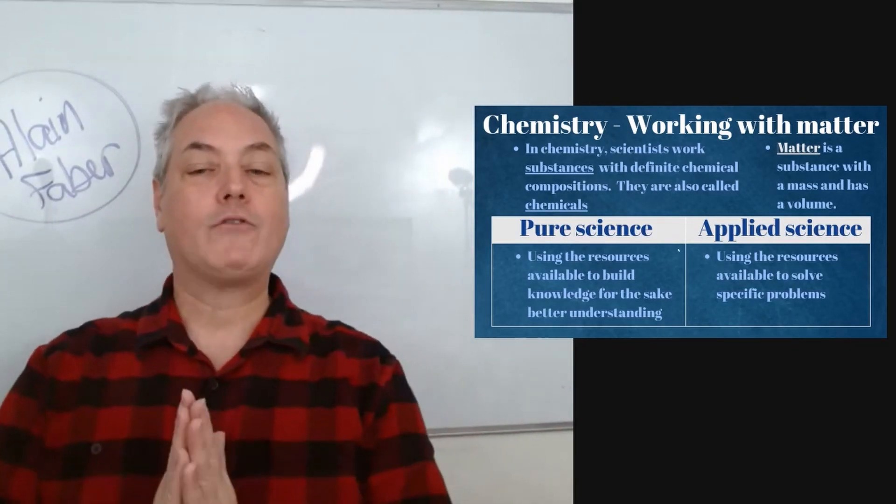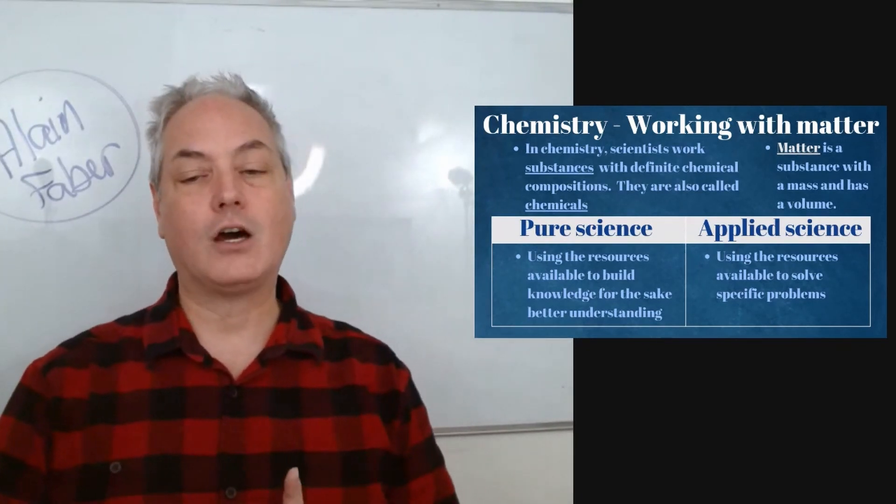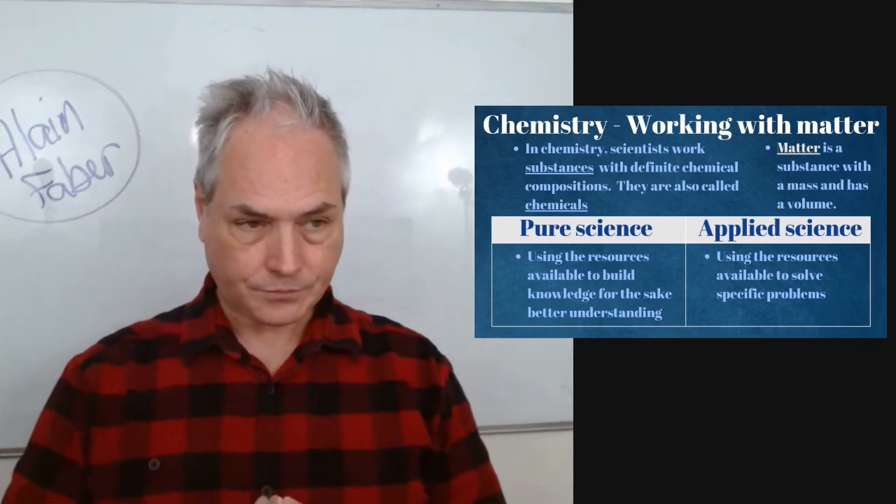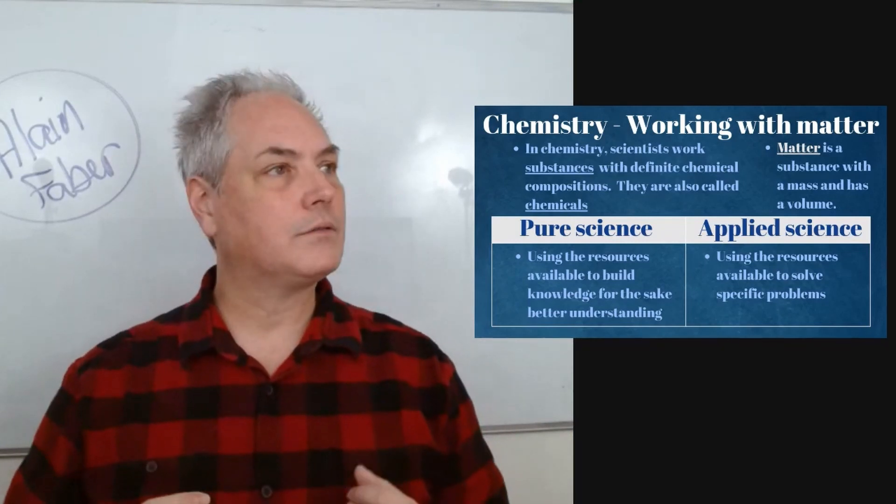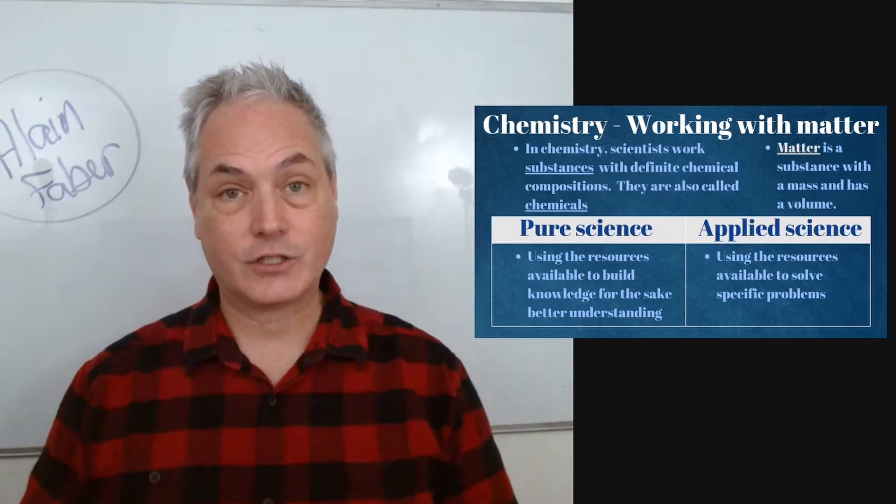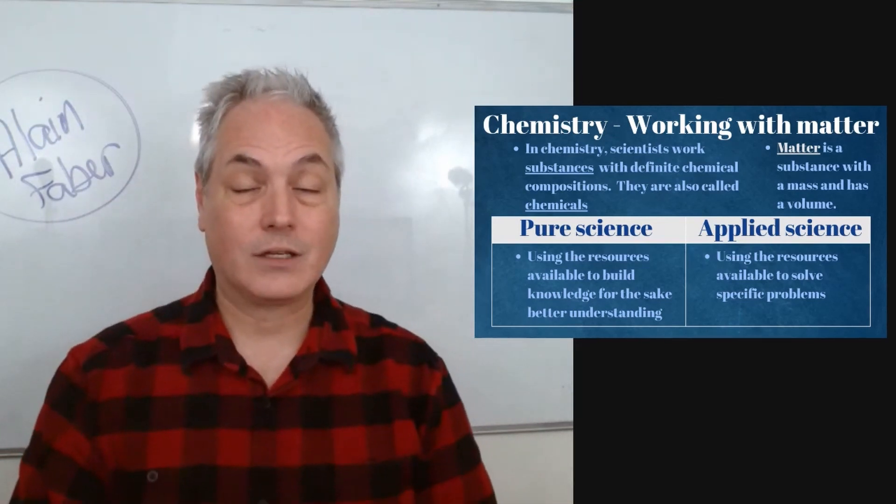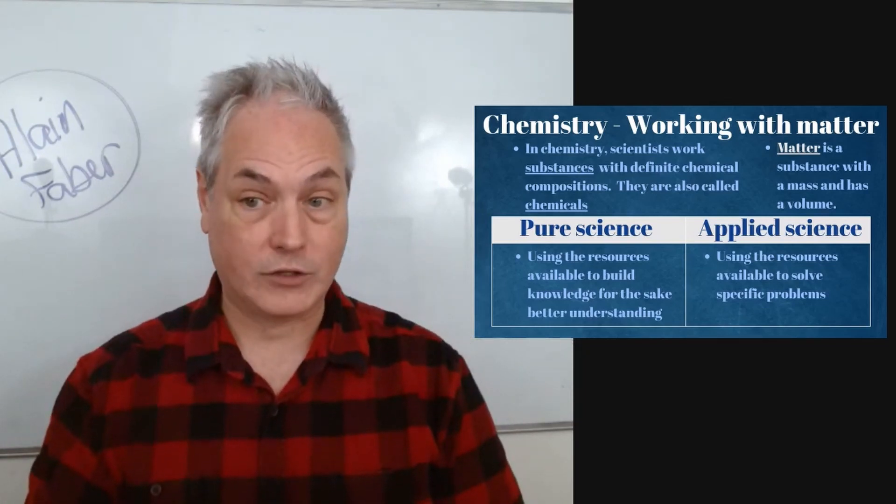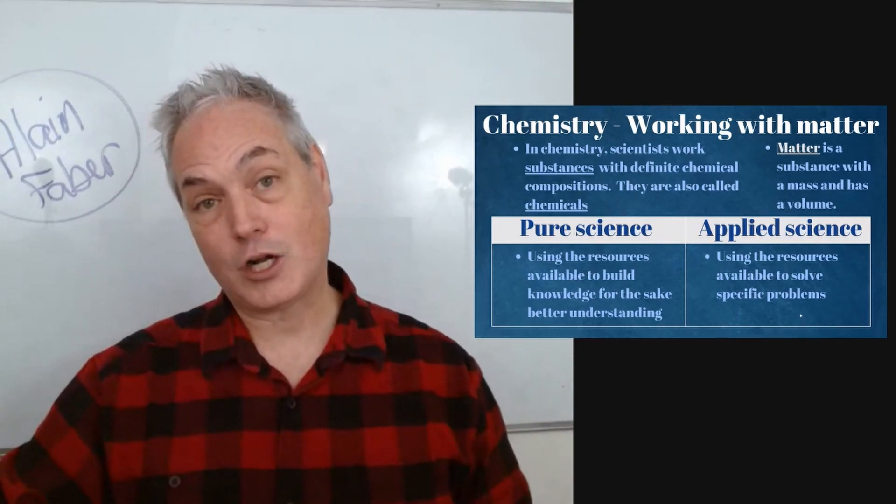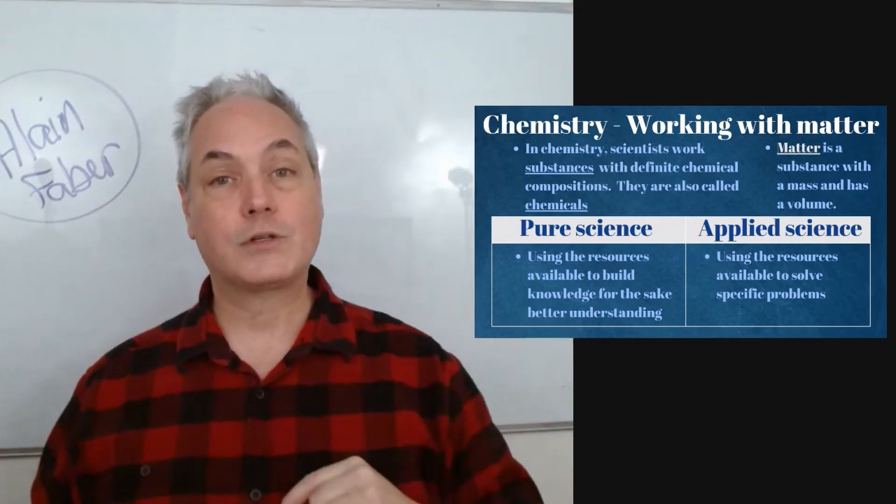Now, there are two types of science we work with. If you have pure science, you're using the resources available to build the knowledge for the sake of understanding. So for example, you may have a chemist that will look at how, for example, when you put concrete together, there's a chemical reaction. The scientists will look at how the concrete and cement will work together so we can build a bridge.